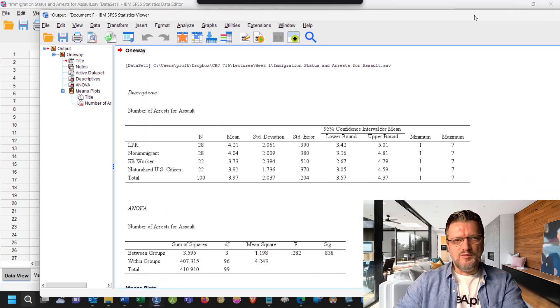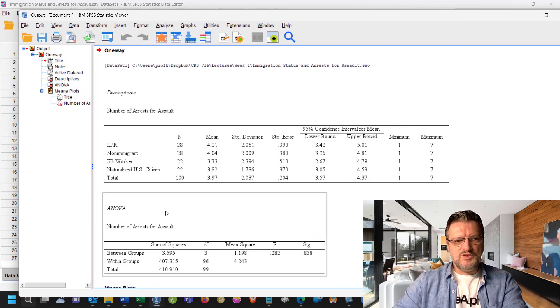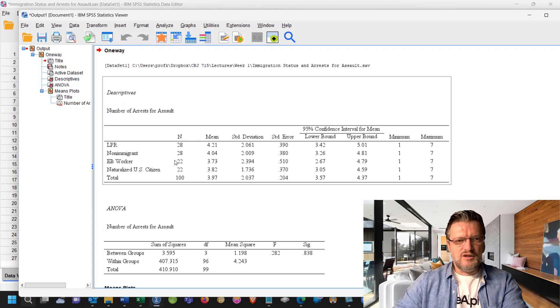I'm going to bring it over here. So we have two tables, descriptives, which gives us the sample, which is 100. We have 28 each LPRs and non-immigrants and 22 EB workers and naturalized citizens and their respective average or mean, as we call in statistics, number of arrests for each of these categories.